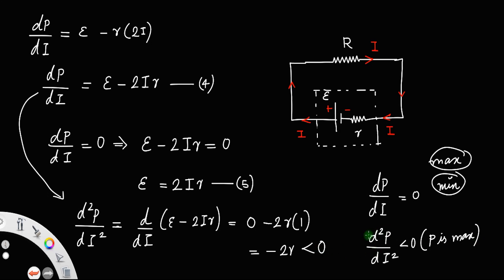According to the second derivative test, when the second derivative of a function is less than 0, the function is at a maximum — provided the first derivative was first set equal to 0.